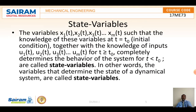Then come the state variables. The variables x1(t), x2(t), x3(t), xn(t) such that the knowledge of these variables at t equal to t0 are called state variables. In other words, the variables that determine the state of a dynamical system are called state variables.